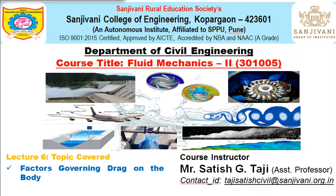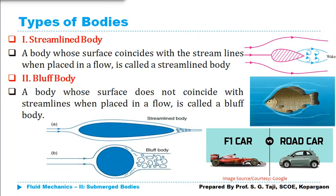In the previous lecture we discussed types of drags and types of bodies, so we will start with a revision. There are two types of body: one is the streamlined body and another is the bluff body. A streamlined body is one where the surface of the body coincides with the streamlines when placed in a flowing fluid. If the surface does not coincide with the streamlines, that body is known as a bluff body.